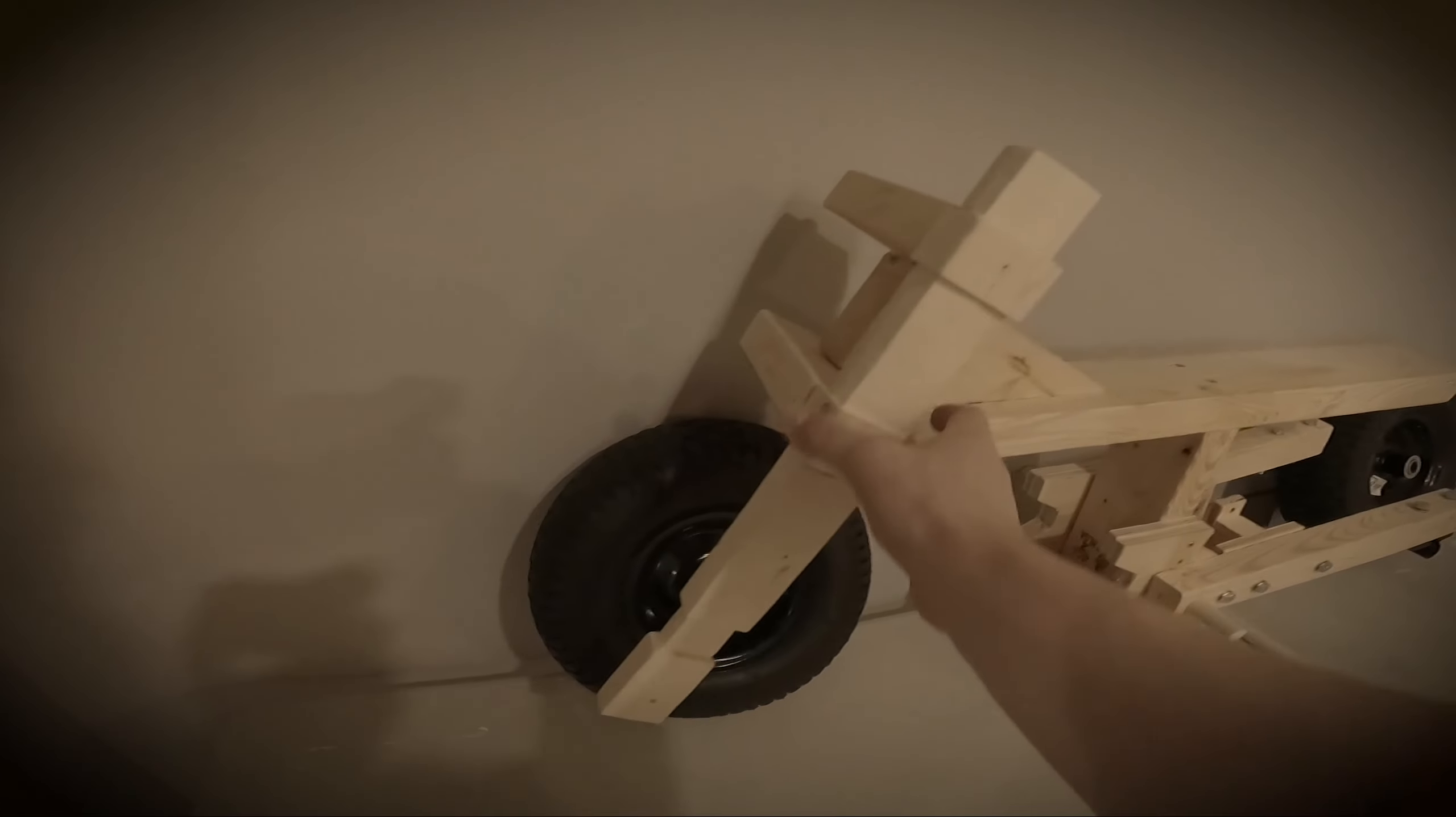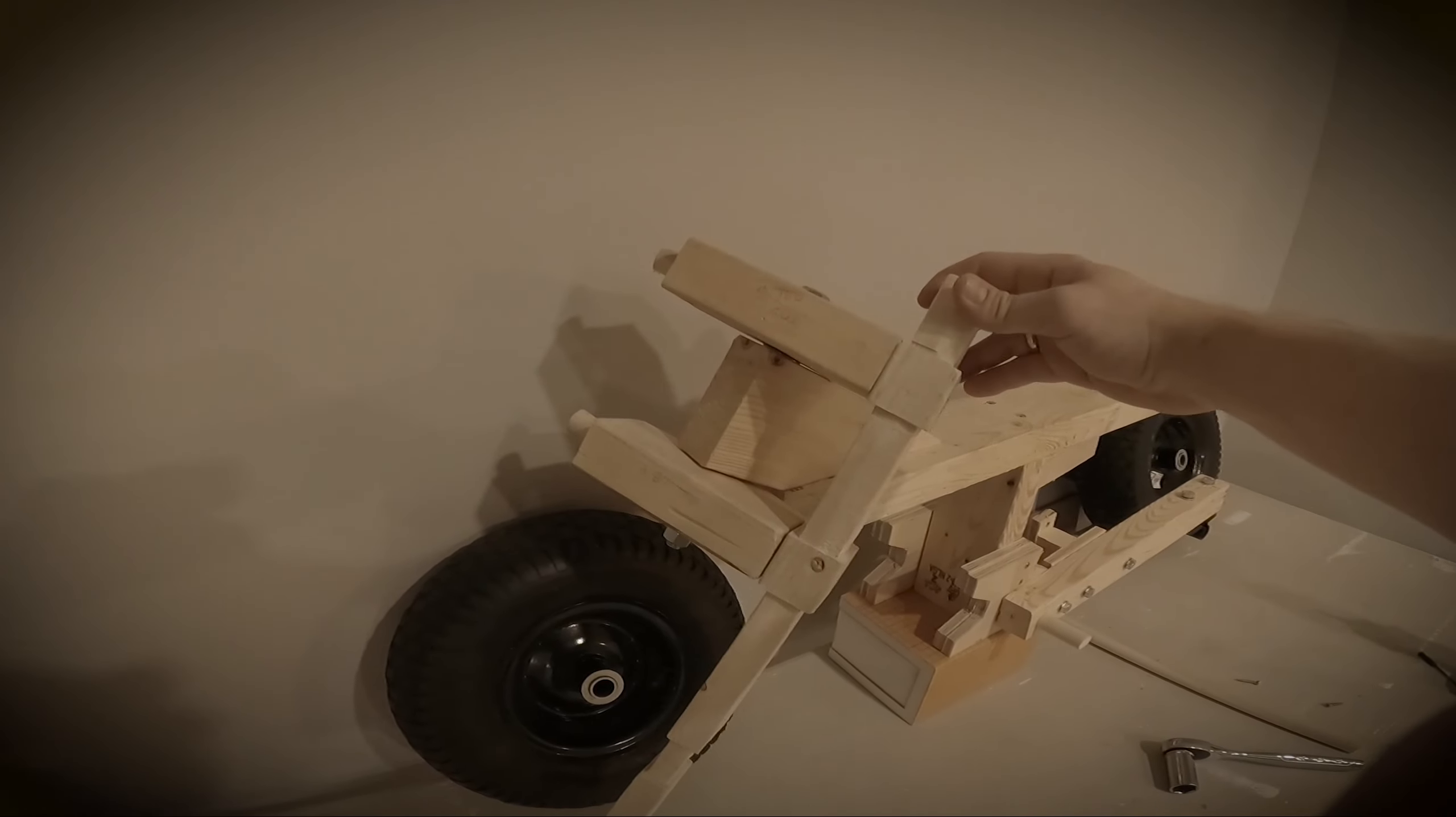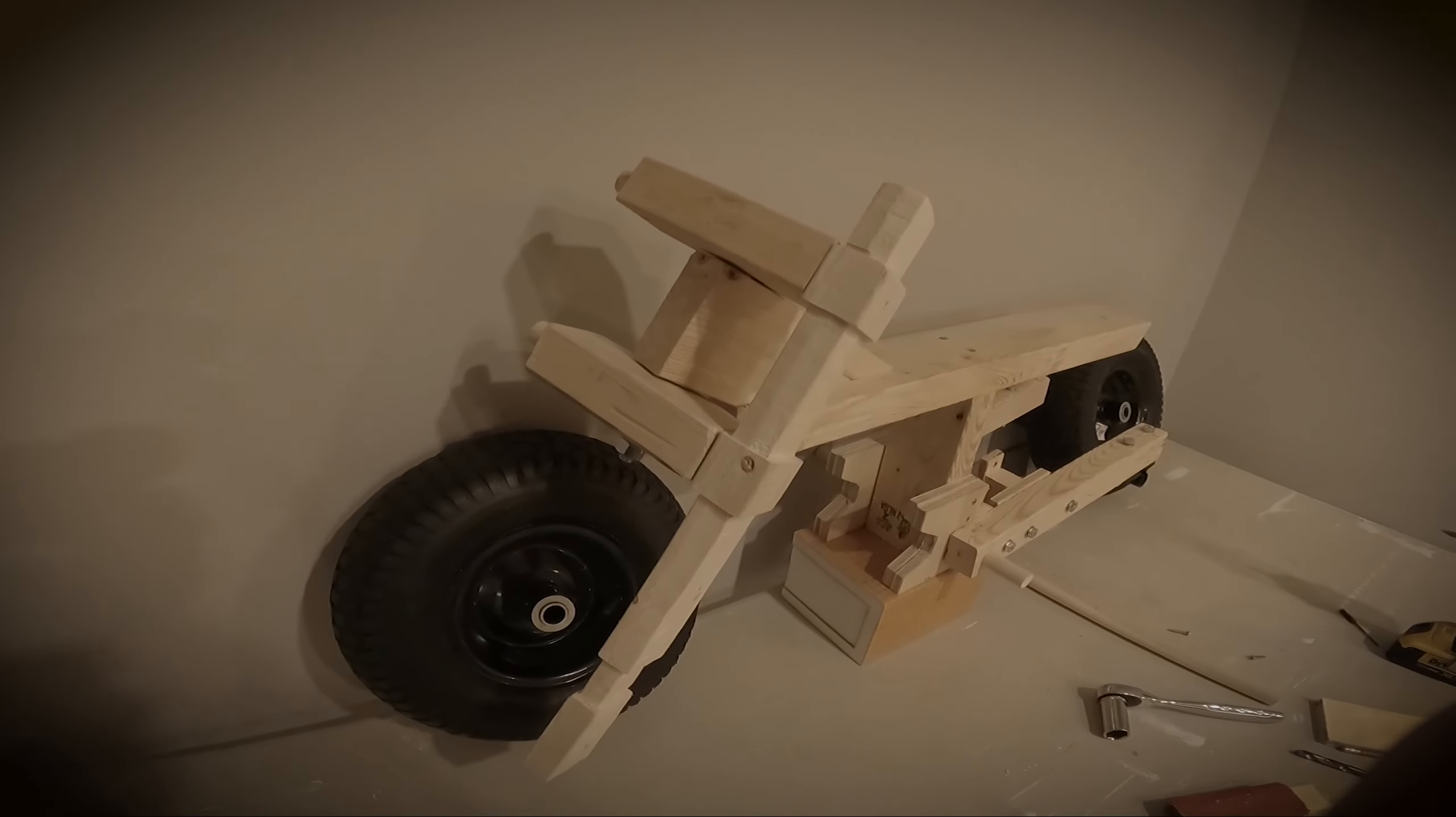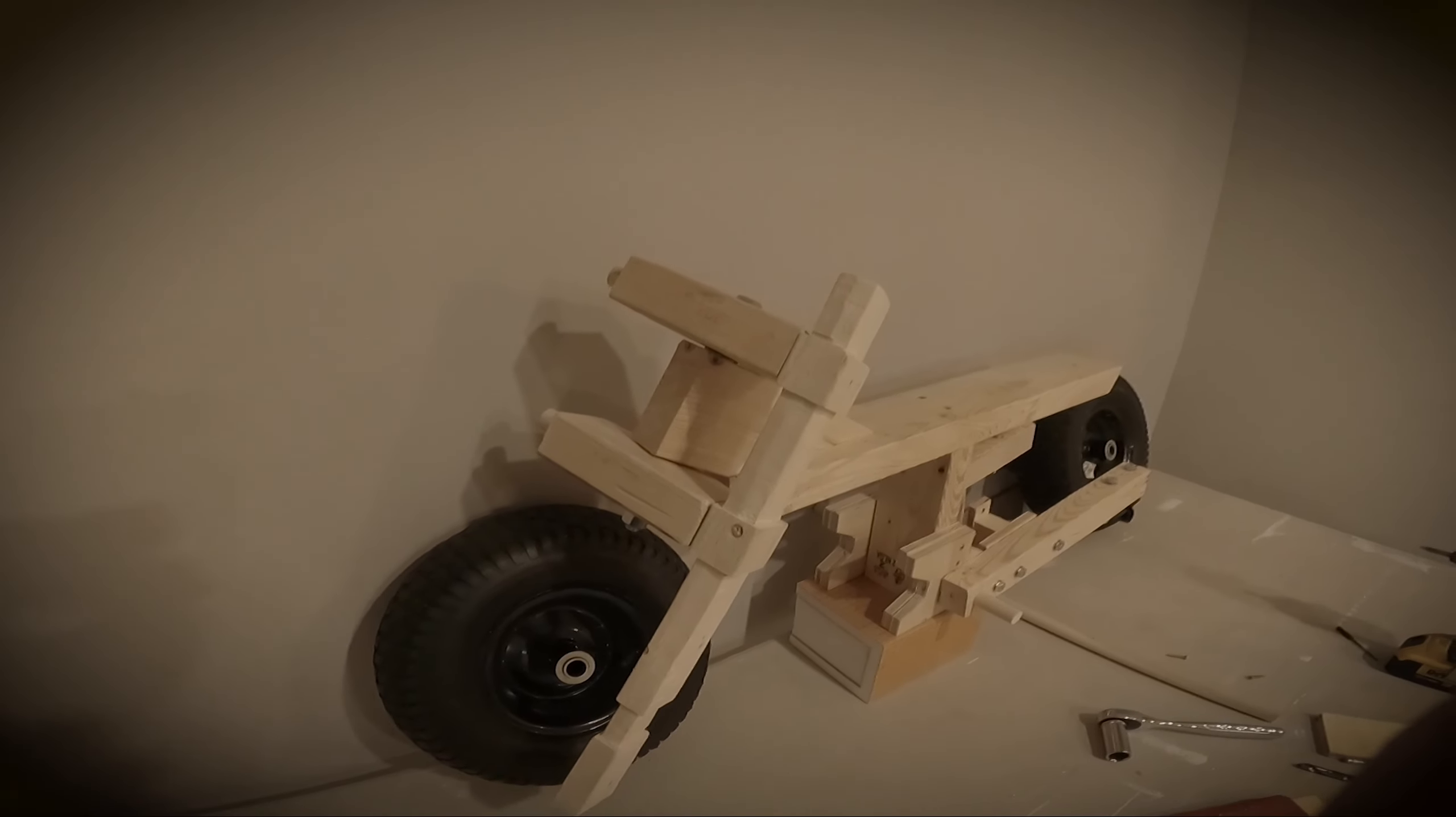So we have some progress. The left fork has been attached to the triple tree clamp so I put the dowels, screwed them in so they don't move, and I made holes on the fork to kind of slide them on. Now we're just gonna make holes for the bolts to anchor them in place so they don't slide out.